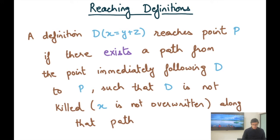A definition D of the form x equals y plus z reaches a point P in the program if there exists a path from the point immediately following D to P such that D is not killed, in other words x is not overwritten along that path. So even if there exists one such path from D to P where x has not been overwritten, then D would be considered to reach P.